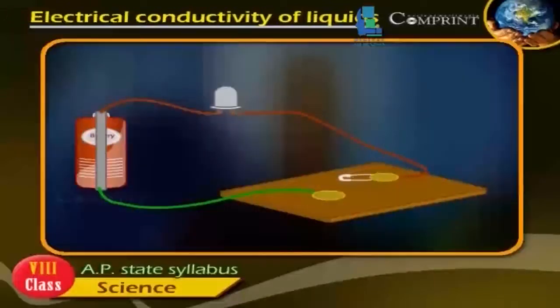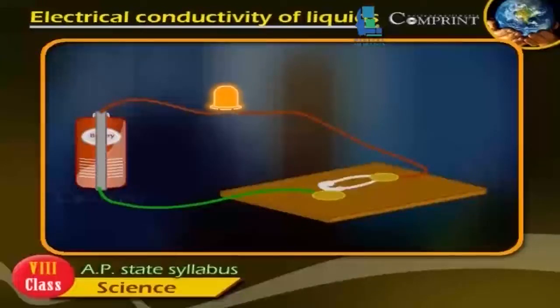Now set up the electrical circuit. Place the safety pin in the ON position. The bulb begins to glow. Now replace the safety pin by a nail.